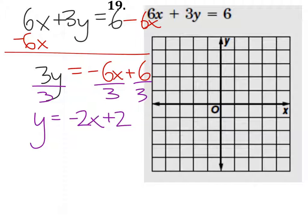Now that we have this in slope-intercept form, we know the y-intercept here is at 0, 2, which is right here.